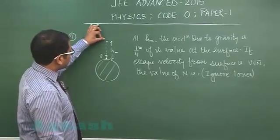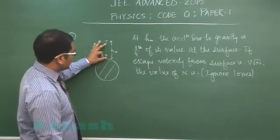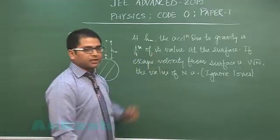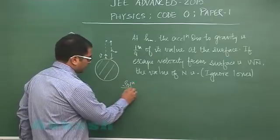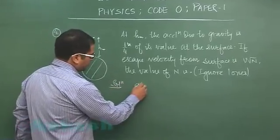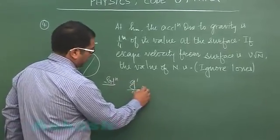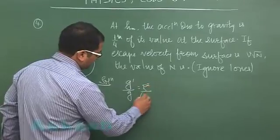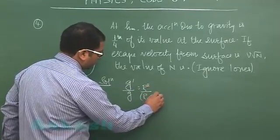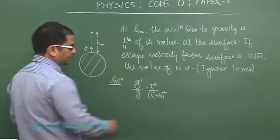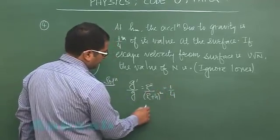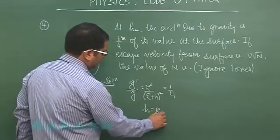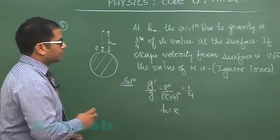From the first particular fact, we know g dash by g is r square by r plus h whole square - variation in g due to height - and that is one fourth. So this clearly implies the value of h is equal to r. That is the first breakthrough we could get.